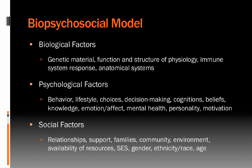The biopsychosocial model tries to look at the broader influences in which we are nested as people. This can include biological factors such as genetic materials, functional structure, physiology, immune system response, and anatomical systems — mostly the things below the level of person. This is really the stuff that is the focus of a purely biomedical model.